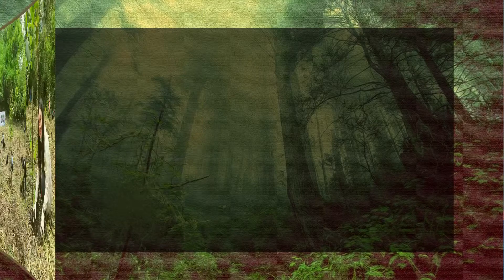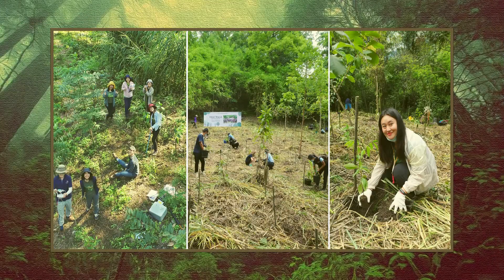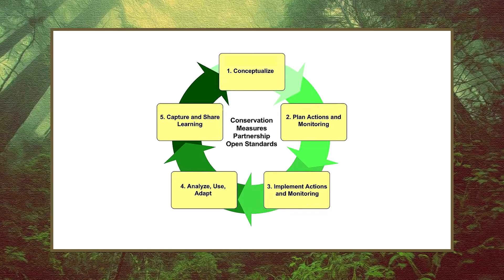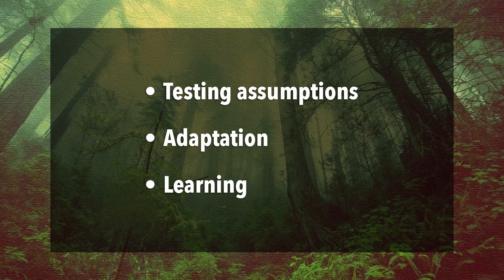Now, forest restoration refers to the process of assisting the recovery of a forest ecosystem that has been degraded, damaged or destroyed. This may involve the reestablishment of characteristics of a forest ecosystem — such as composition, structure and function — which were prevalent before its degradation. Adaptive management can be defined as the integration of design, management and monitoring to systematically test assumptions in order to adapt and learn. It offers a method by which research can be incorporated into conservation action, involving testing assumptions, adaptation, and learning.